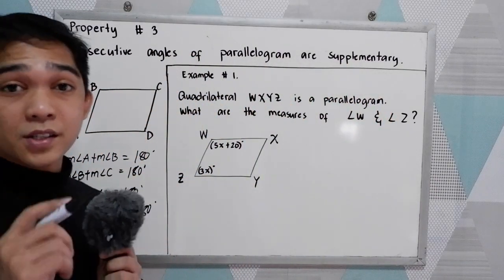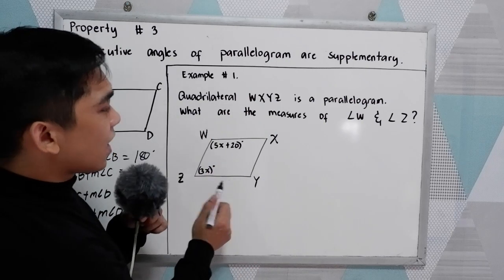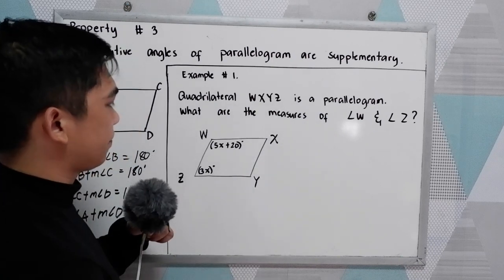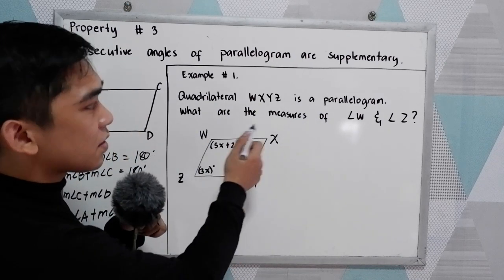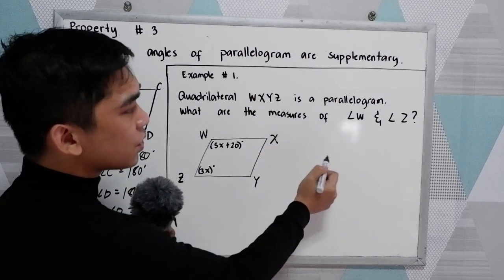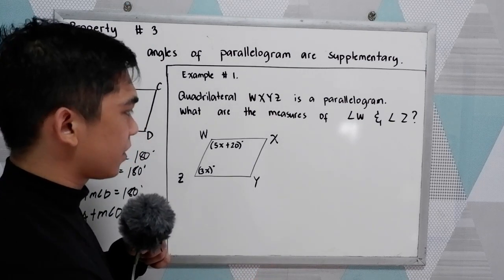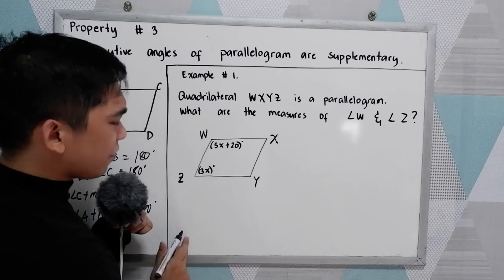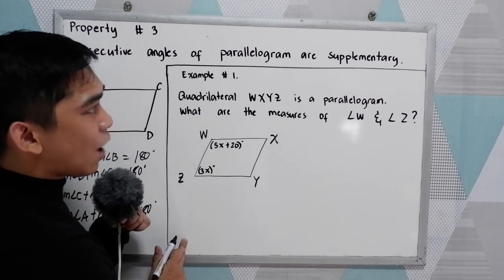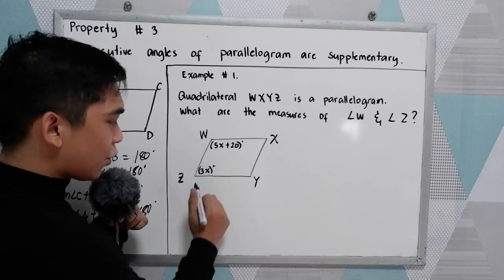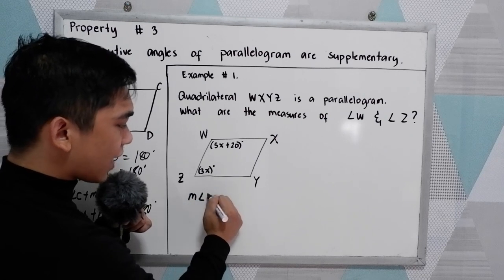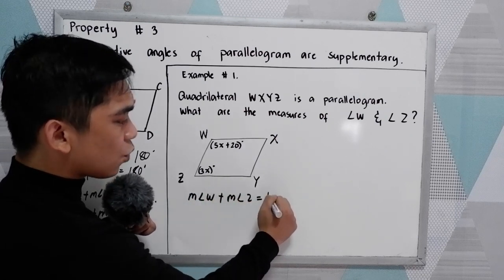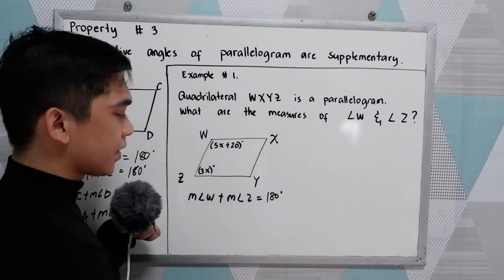Now let's have Example 1. Quadrilateral WXYZ is a parallelogram. What are the measures of angle W and angle Z? Applying property number 3, if we add the measure of angle W plus the measure of angle Z, that is equal to 180 degrees.